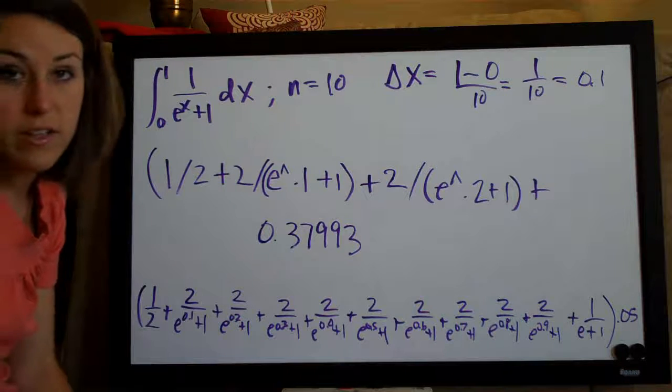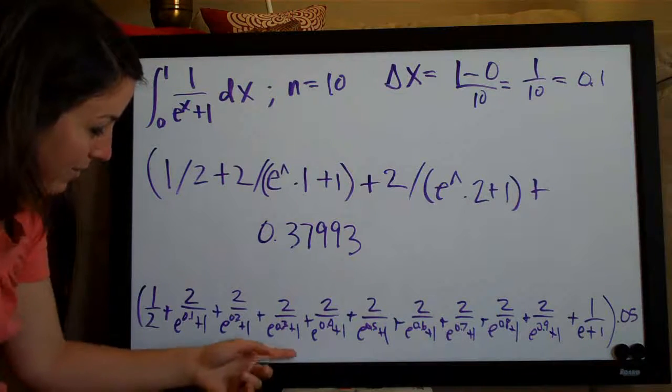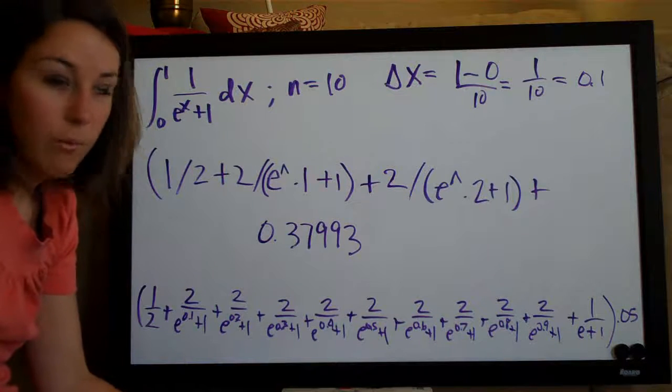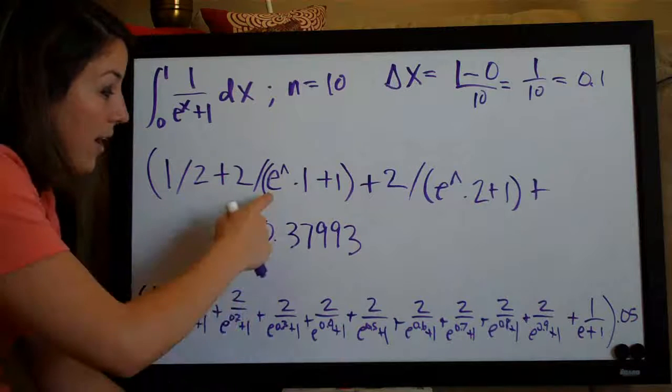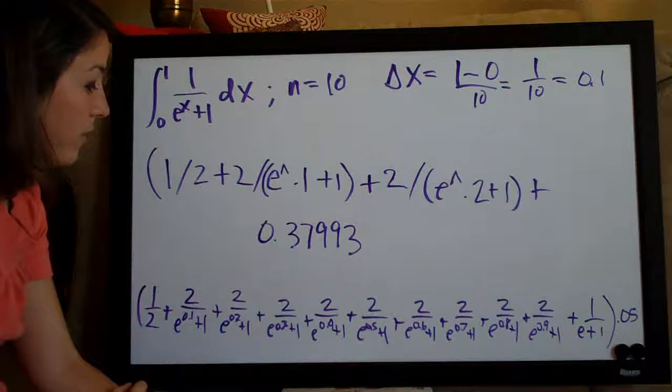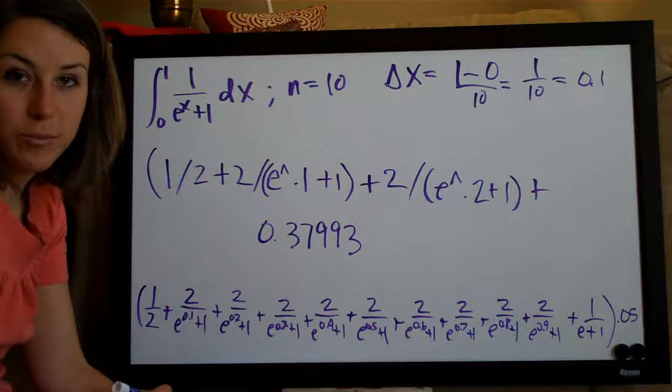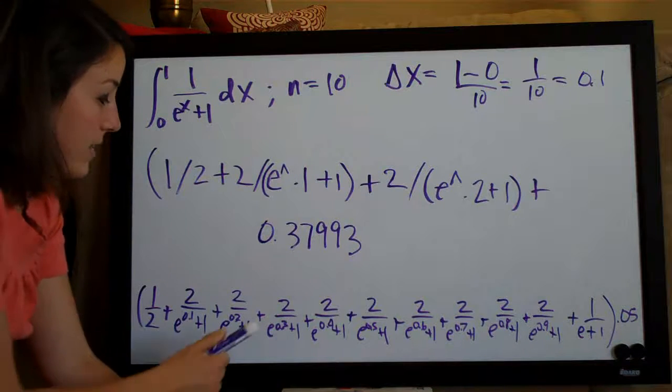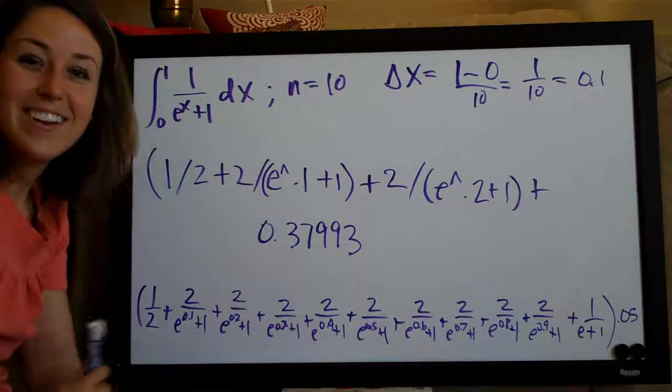I know it's a lot of work on the calculator but you can't really make this simpler without busting out the old calculator. So go ahead and plug that all in. Be really careful about your parentheses so you make sure that you don't miss anything or that the calculator doesn't misinterpret what you're trying to plug in. And see if you get .37993. Thanks guys. I'll see you next time.